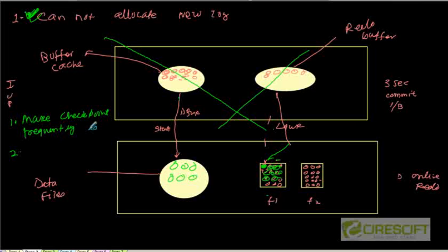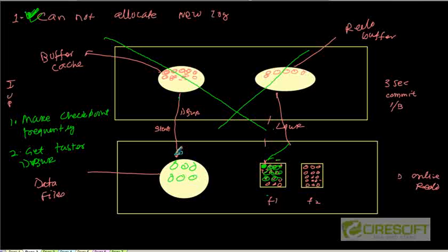It is always a probability — it is not going to completely get rid of your problem. Number two: get a faster DB writer. If you can write faster by using multiple slaves, because DB writer just collects dirty buffers and gives them to slaves, use more number of slaves so that DB writer can delegate and collect the next batch. Implement a faster DB writer mechanism using more slaves or a faster disk so that you can write faster.